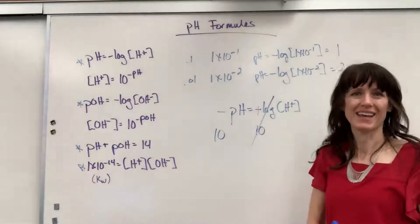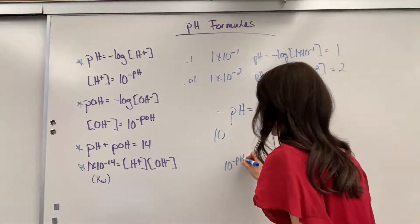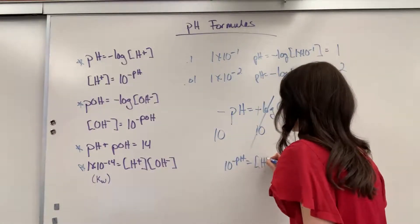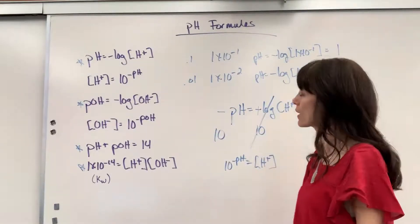The log and the 10 cancel out. So, we're now going to have 10 to the negative pH, equals your hydrogen concentration. And there you have it right there.